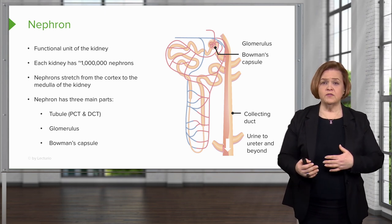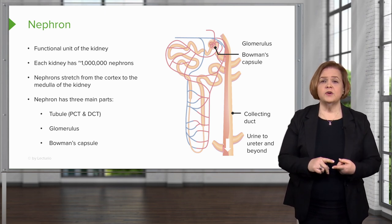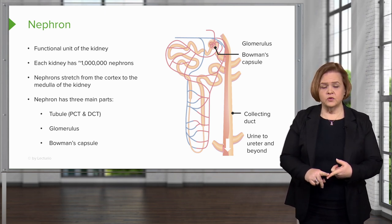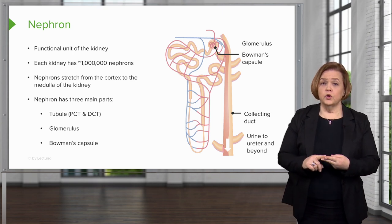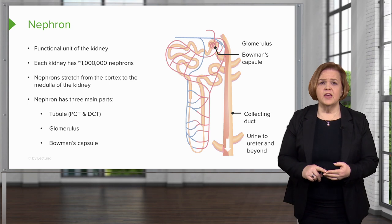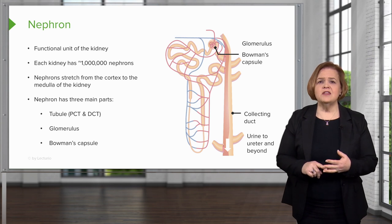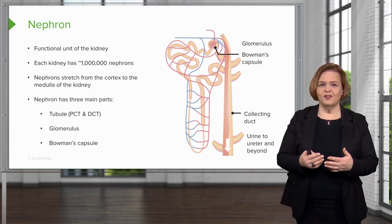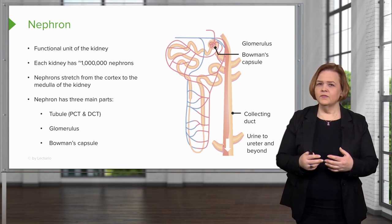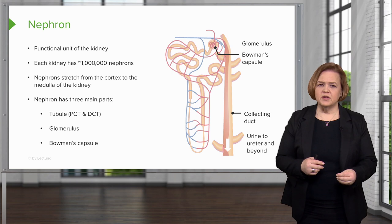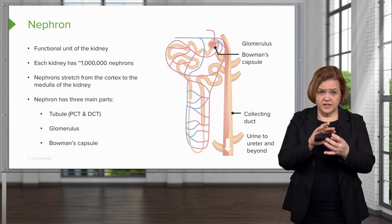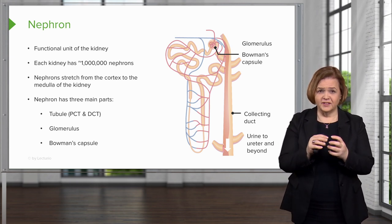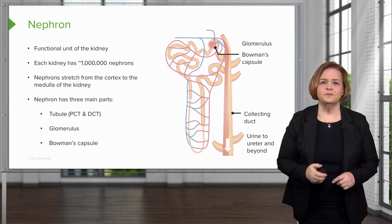So that's a quick review. We know what diuretics do — we're trying to get rid of excess fluid or edema, and they lower a patient's blood pressure. Diuretics work in the nephron, which has three parts: the tubules, the glomerulus (that tangle of capillaries), and the Bowman's capsule.